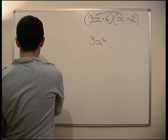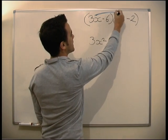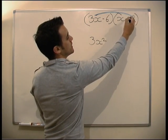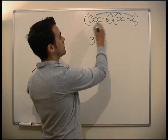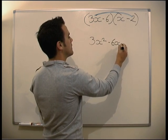This time it's 3x times x, which gives us 3x². Next up, 3x times minus 2. Let's not forget there's a minus in front of there. So 3x times minus 2 gives us minus 6x.